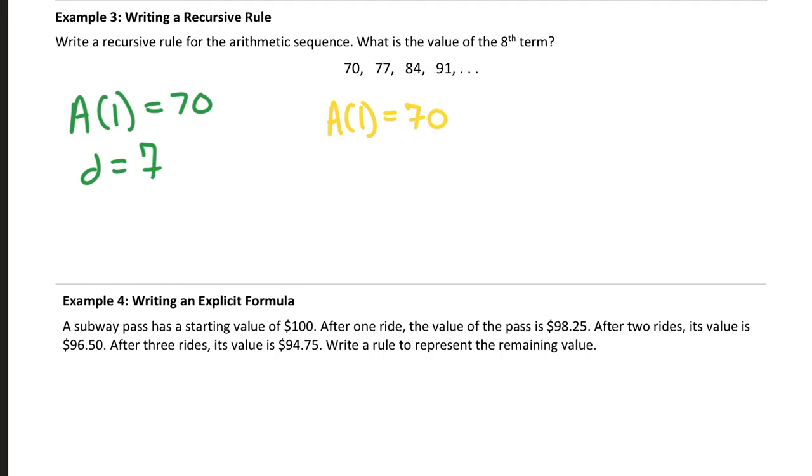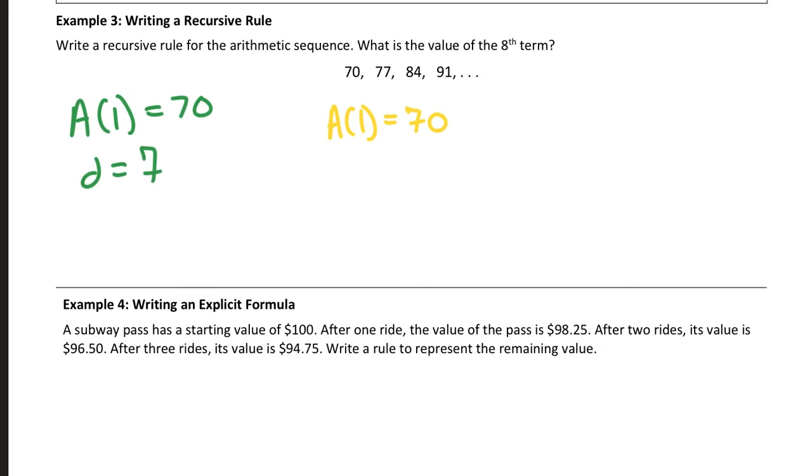And our recursive rule uses that same notation, A parentheses N, which means the nth term. I think of it as our current term. So the notation I use for a recursive rule is I take the last term. So this notation represents the last term. If A parentheses N represents the current term, A parentheses N minus 1 represents the last term. So to get the next term, you take the last term and you add 7 to it.